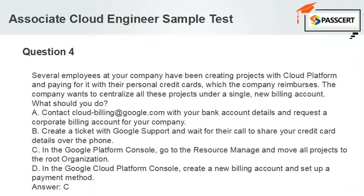A. Contact cloud-billing@google.com with your bank account details and request a corporate billing account for your company. B. Create a ticket with Google support and wait for their call to share your credit card details over the phone. C. In the Google Cloud Platform Console, go to the Resource Manager and move all projects to the root organization. D. In the Google Cloud Platform Console, create a new billing account and set up a payment method. Answer: C.